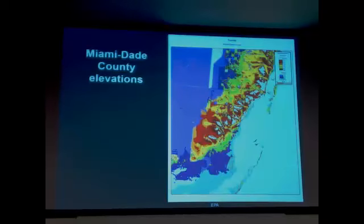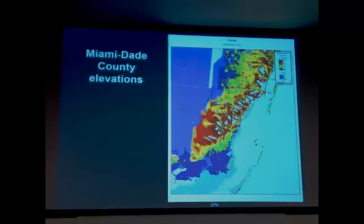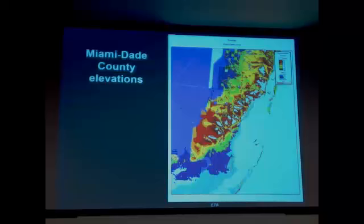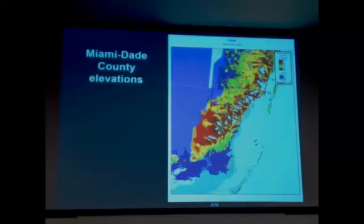This is a simplistic map done by the EPA before the LIDAR data was available. What's nice about it is all those white areas — this is Miami-Dade, you're sitting over here — those white areas are greater than 3 meters elevation. Non-white areas are not. So you can see what small changes in sea level rise can do to our community, as has been shown by the past few years.